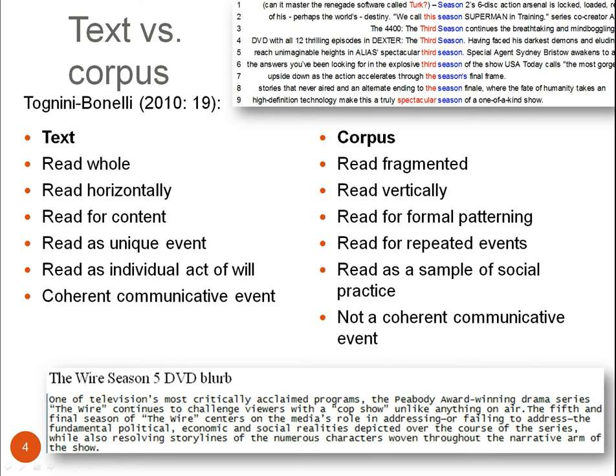In contrast, you can also analyse the text as a coherent communicative event, looking at its content. For example, if you look at the bottom of the screen, you could look at how the blurb for the TV show The Wire starts by evaluating and introducing the series in relation to its audience, before it goes on to describing the storylines. But you wouldn't want to make the claim, based on this unique text, that this is what happens in all DVD blurbs.